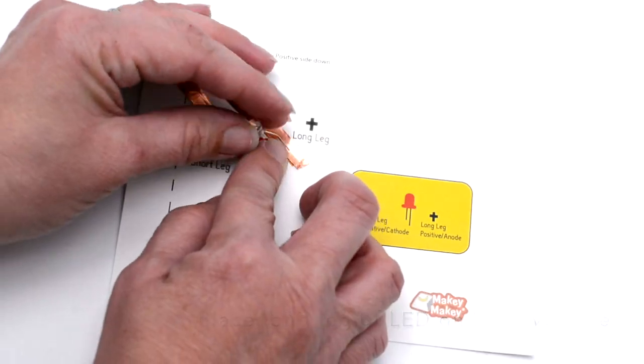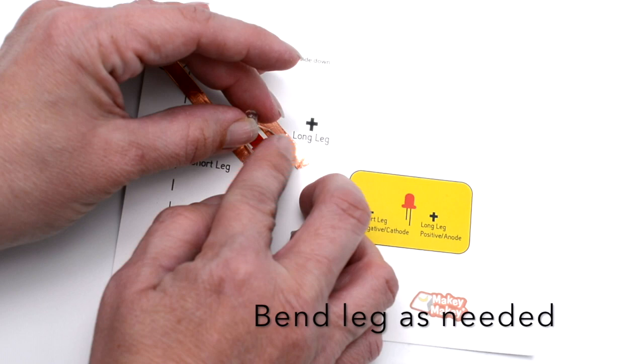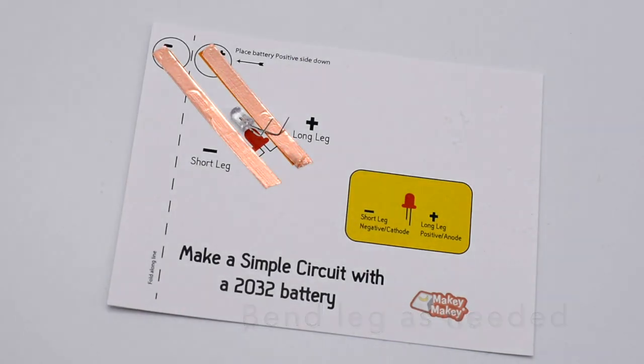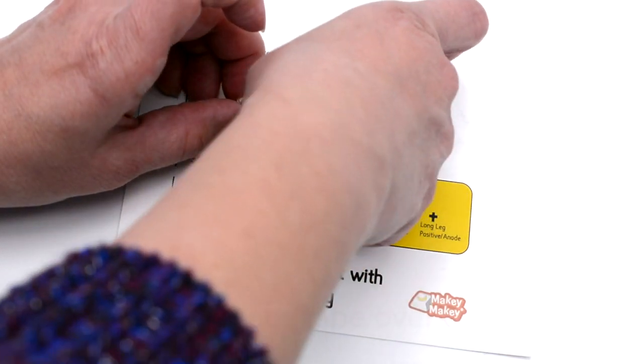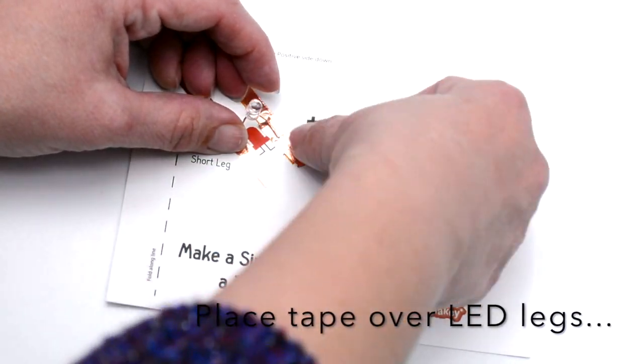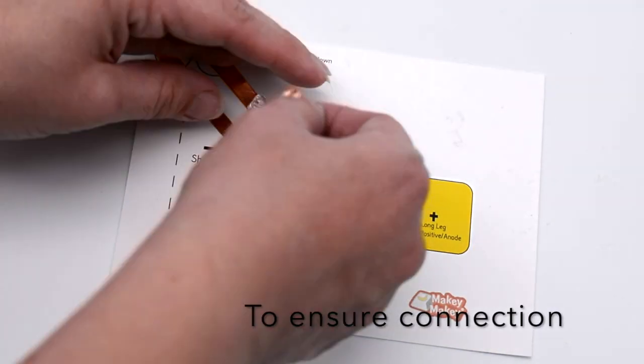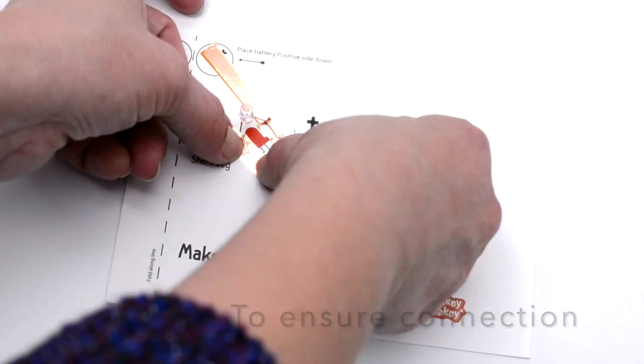And then you're going to find the long leg of your LED. That's the positive leg. That positive leg needs to go on the positive side of the tape, your tape trace, and then you're going to tape it down. You can use copper tape to tape it down, which will help with connectivity, or you can just use regular tape.